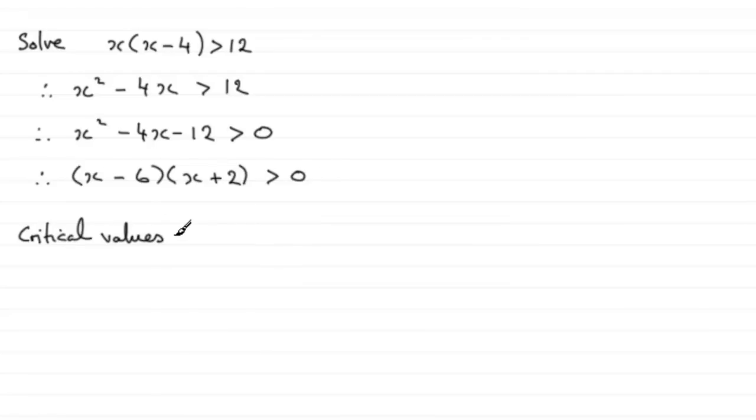In other words they are when x minus 6 equals zero or x plus 2 equals zero. Leading to those critical values being x equals 6 or x equals minus 2.